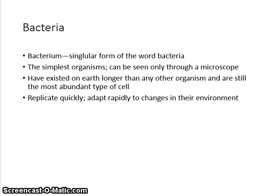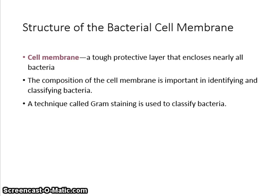Bacterium is a singular form of the word bacteria. They are the simplest organisms that can be seen only through a microscope. They have existed on earth longer than any other organism and are still the most abundant type of cell. They replicate quickly and adapt rapidly to changes in their environment. The bacterial cell membrane is a tough protective layer that encloses nearly all bacteria. The composition of the cell membrane is important in identifying and classifying bacteria.